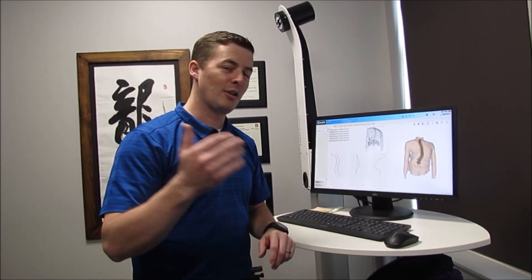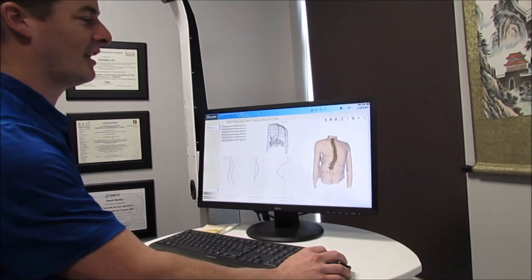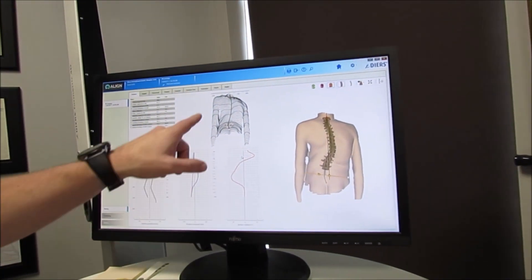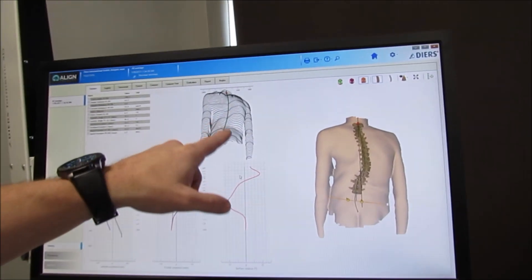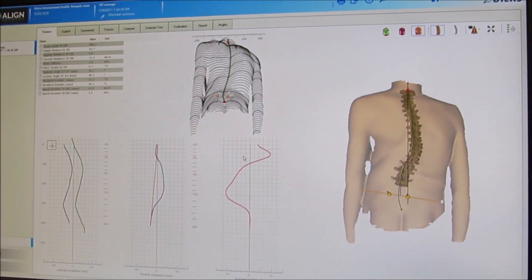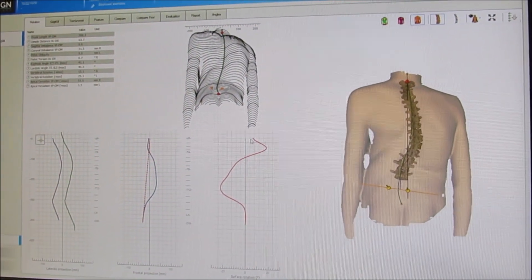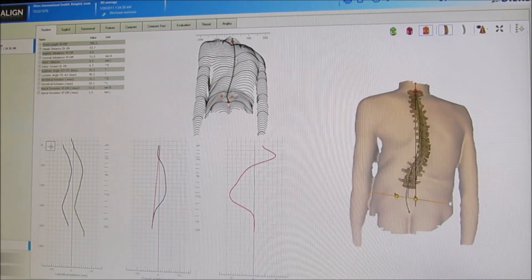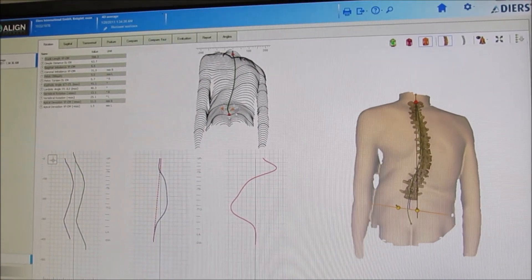So if you come in a little closer, I'll kind of explain what it does. Basically we see a picture of the back with lines on it. Those are the lines that are projected on the back that it takes a picture of. Then it sees these lines and says, okay, based on these lines, it finds a few different landmarks.